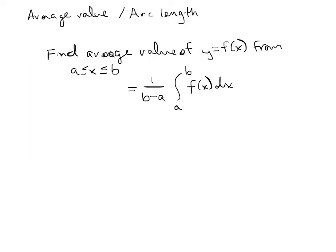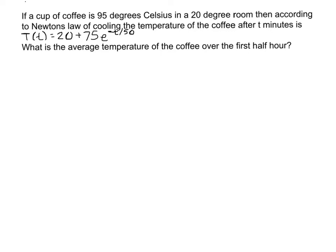So let's do an example. If we have a cup of coffee at 95 degrees Celsius and the room is 20 degrees Celsius, then according to Newton's law of cooling, the temperature of the coffee after t minutes is going to be: T(t) = 20 plus 75 e to the negative t over 50. And we want to know what the average temperature of the coffee over the first half hour is.